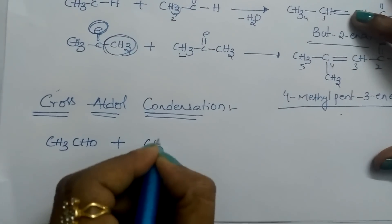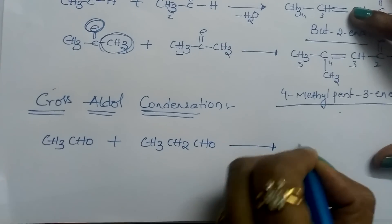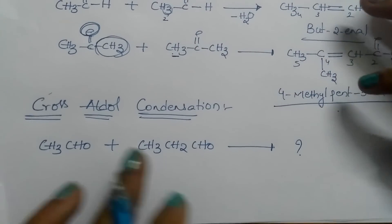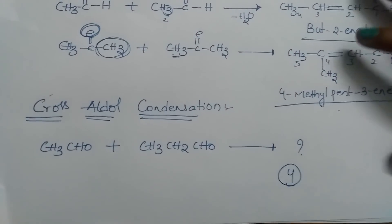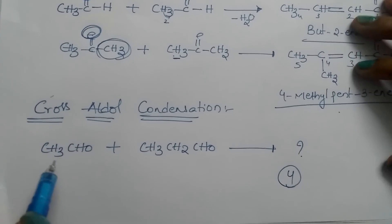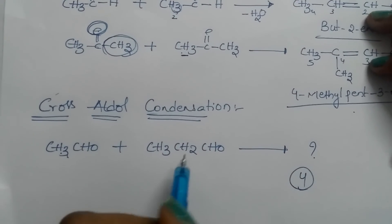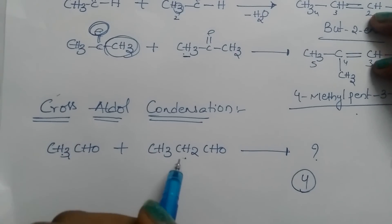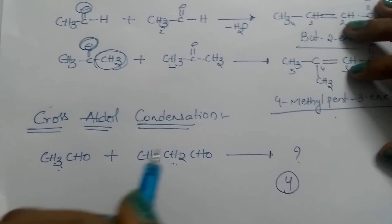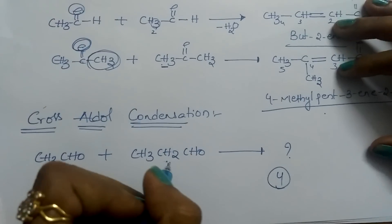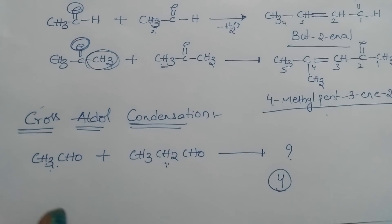Suppose acetaldehyde is reacting with propanaldehyde. How many products do we get? Students expect just two products, but we are actually going to get four products. If one acetaldehyde reacts with another acetaldehyde, we get one product. One propanaldehyde with another propanaldehyde gives one more product. Acetaldehyde reacting with propanaldehyde gives one product, and propanaldehyde reacting with acetaldehyde gives one more product.